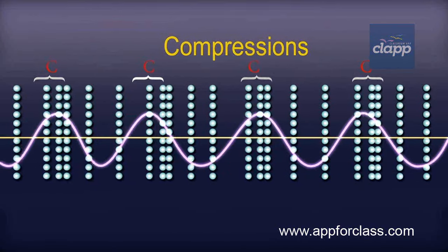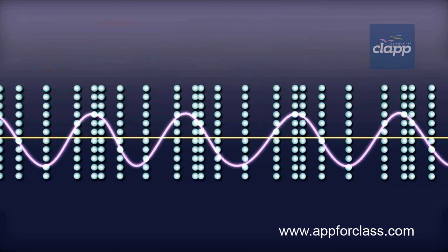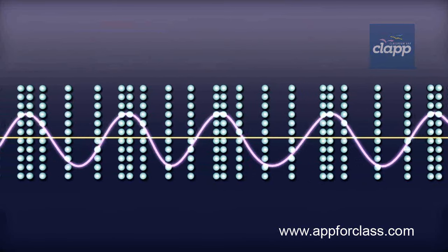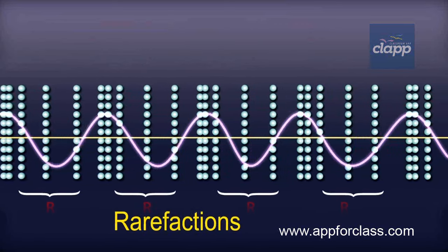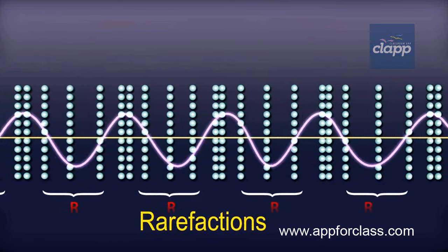The region of low pressure is experienced in places where the particles of medium are far apart from each other. This is known as rarefactions. It is denoted by R.